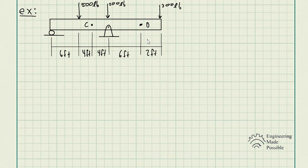In this problem, we need to determine the shear force and moment at points C and D. We have a beam with its supports — a roller and a hinge — with external forces of 500 pounds, 200 pounds, and 300 pounds being applied. All relevant dimensions and locations are given.